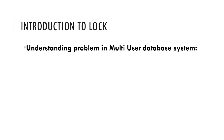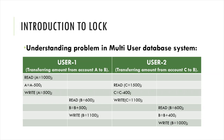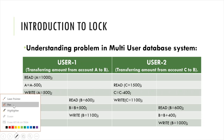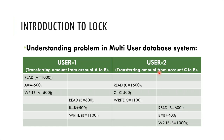We have two users — User 1 and User 2. User 1 is transferring amount from account A to B, and User 2 is transferring amount from account C to B. So in a multi-user system, multiple users operate on one database concurrently.